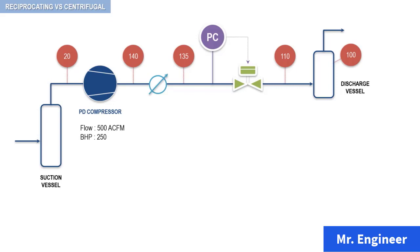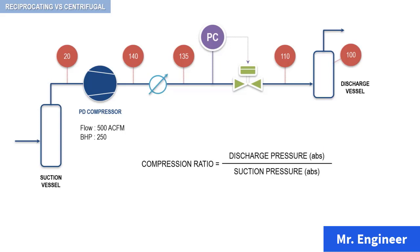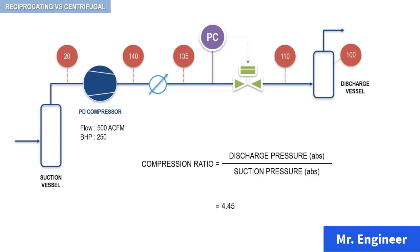The compression ratio, based on the suction and discharge pressures, is calculated as follows. It is equal to the discharge pressure expressed in absolute pressure, divided by the suction pressure of the compressor, also expressed in absolute pressure. So here, since all the readings are expressed in gauge pressure, we need to convert them into absolute pressure. The discharge pressure is equal to 140 psi plus 14.7, and the suction pressure is 20 psi plus 14.7. So the compression ratio is equal to 4.45.